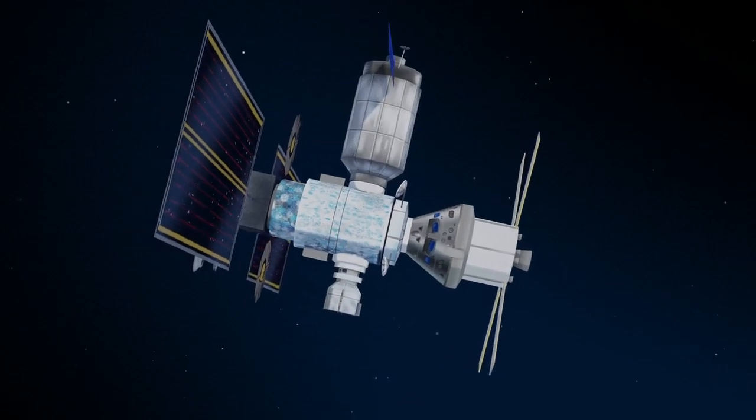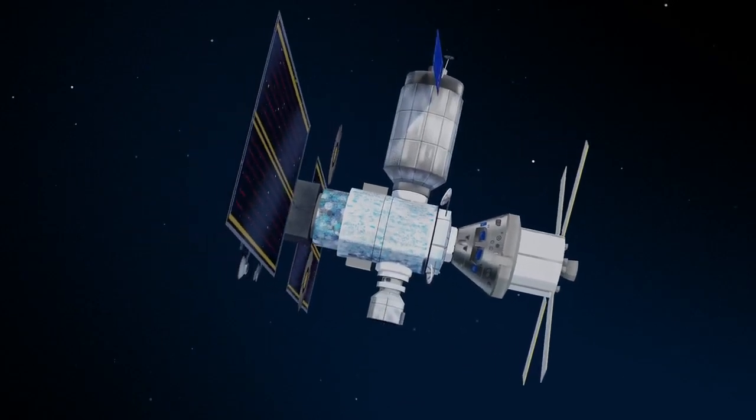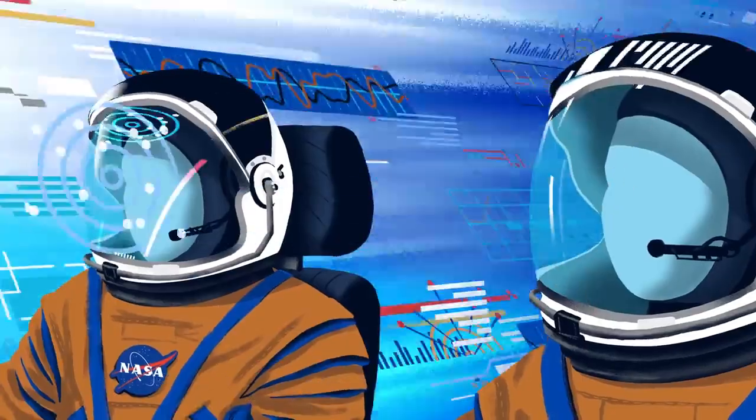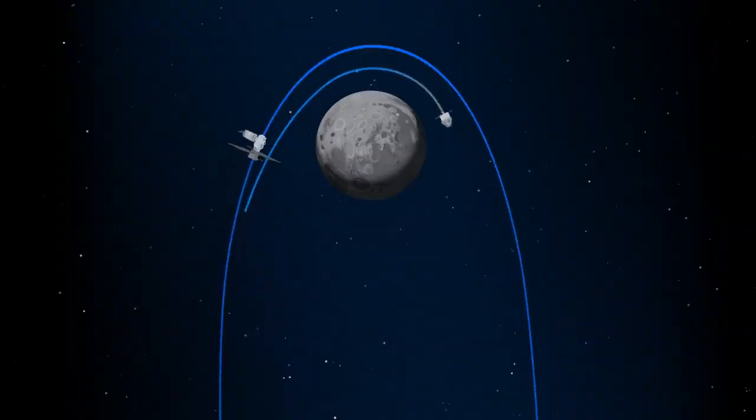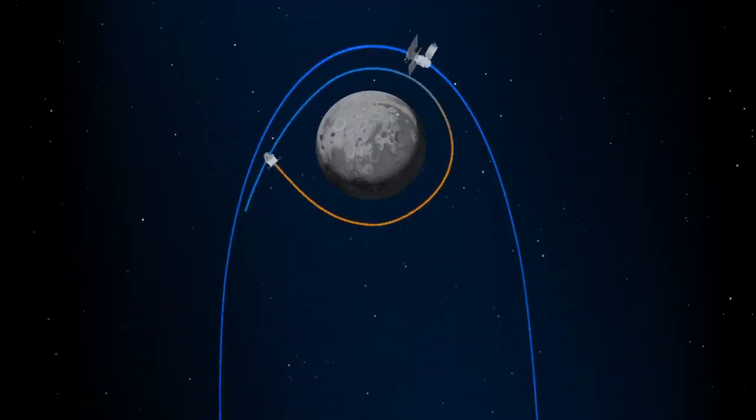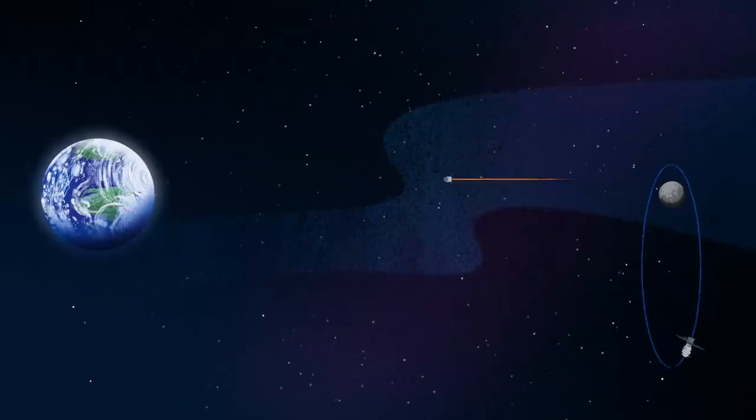Once back aboard the Orion spacecraft and undocked from Gateway, the crew fire their engine once to break out of the halo orbit, and once again to sling the spacecraft around the Moon, placing it on a multi-day trajectory back towards Earth.